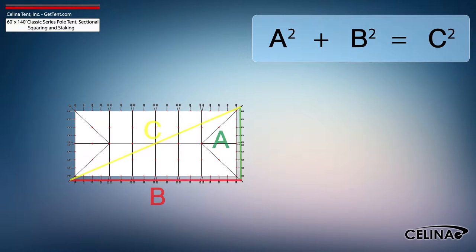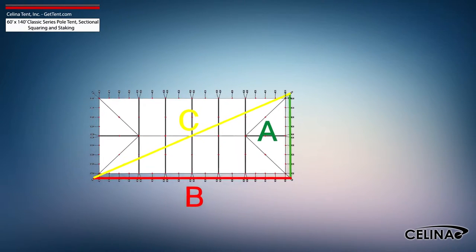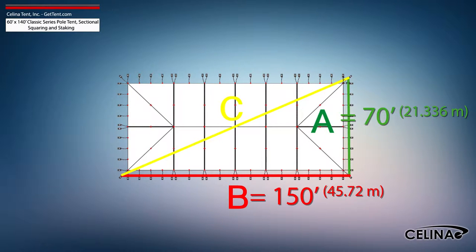Using the Pythagorean theorem and adjusting out for 5-foot staking, the entire tent footprint will be 70-foot by 150-foot with a 165-foot, 6-inch diagonal length.